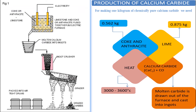Lime, in addition to coke and heat, produces calcium carbide and carbon monoxide. Carbon monoxide escapes and burns at the mouth of the furnace.